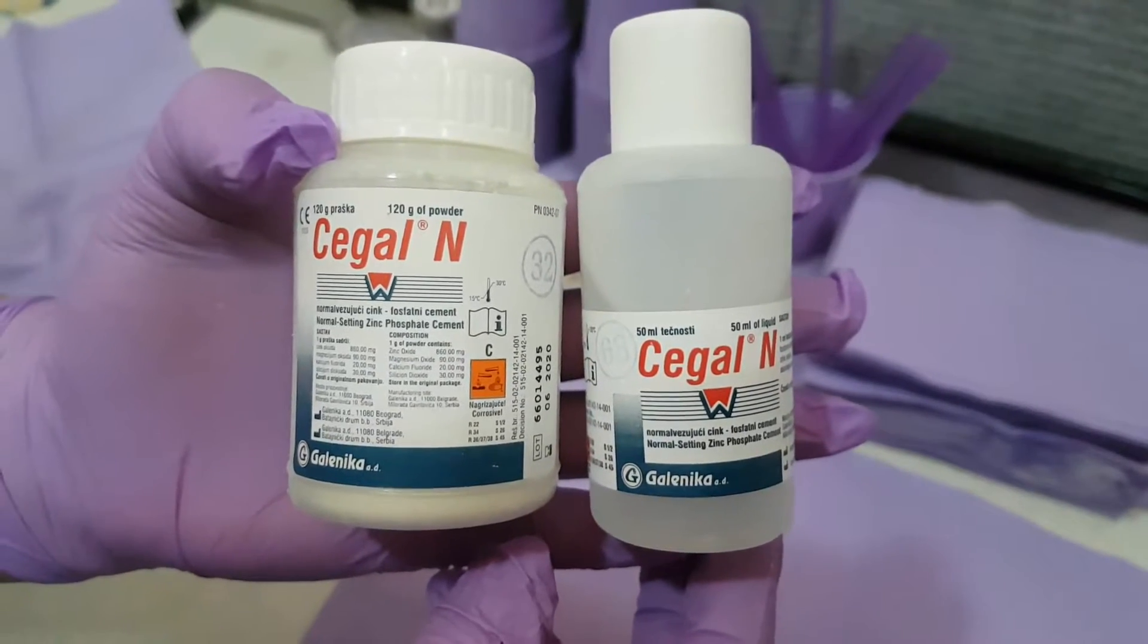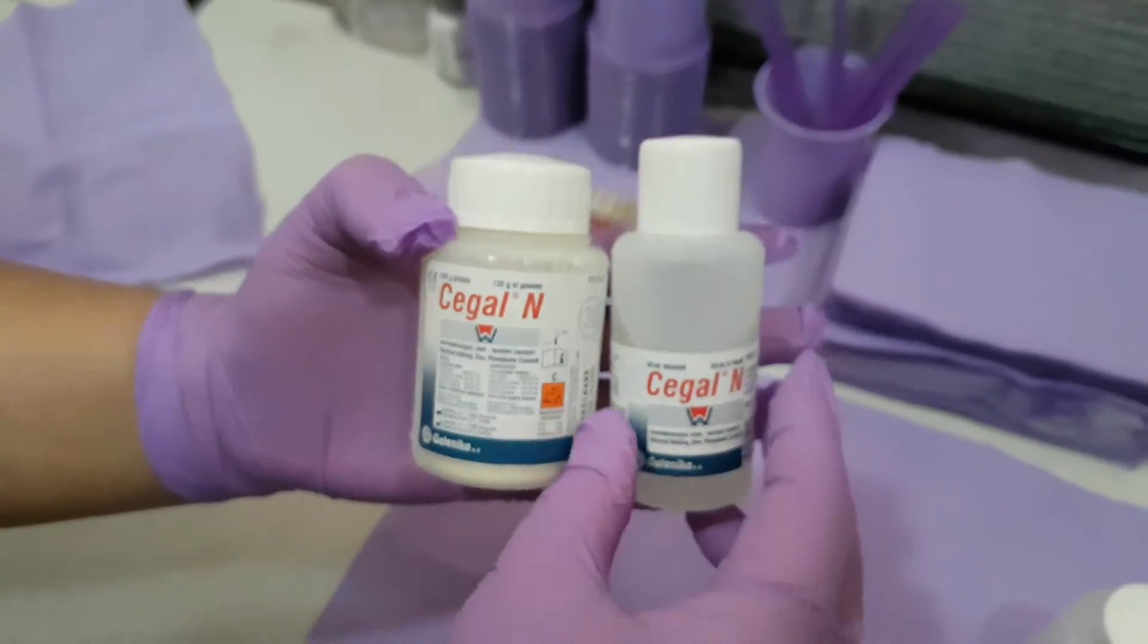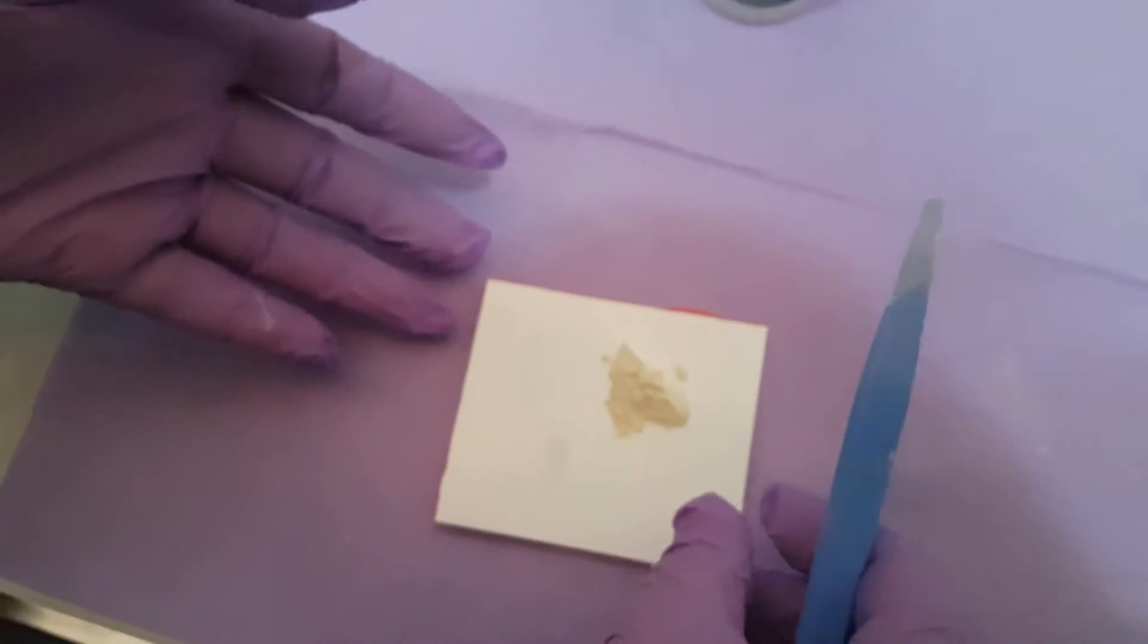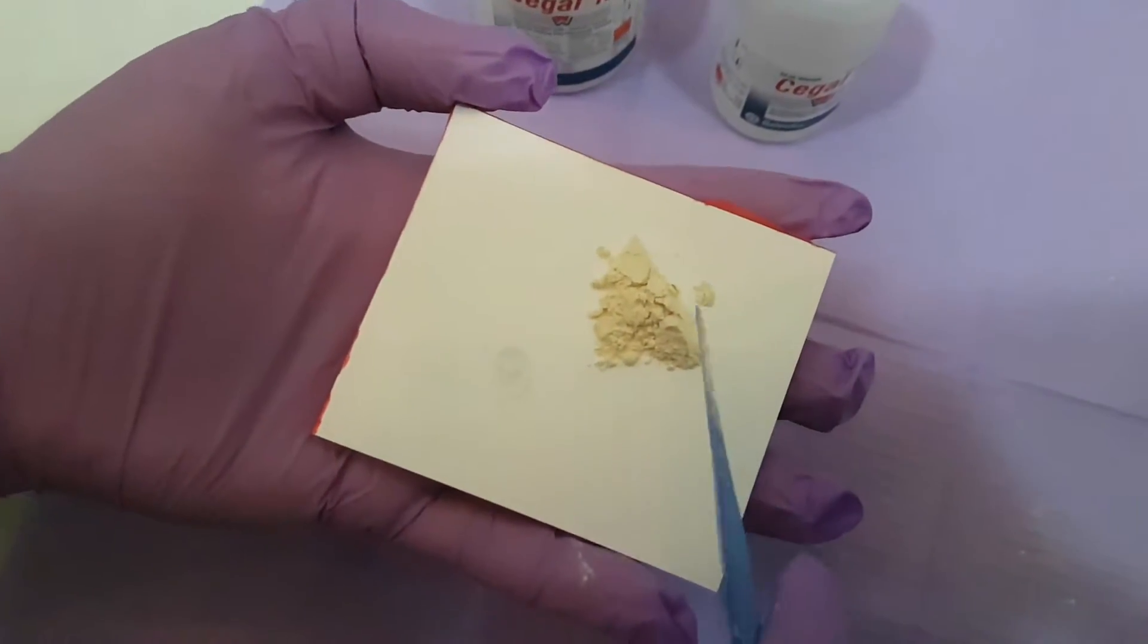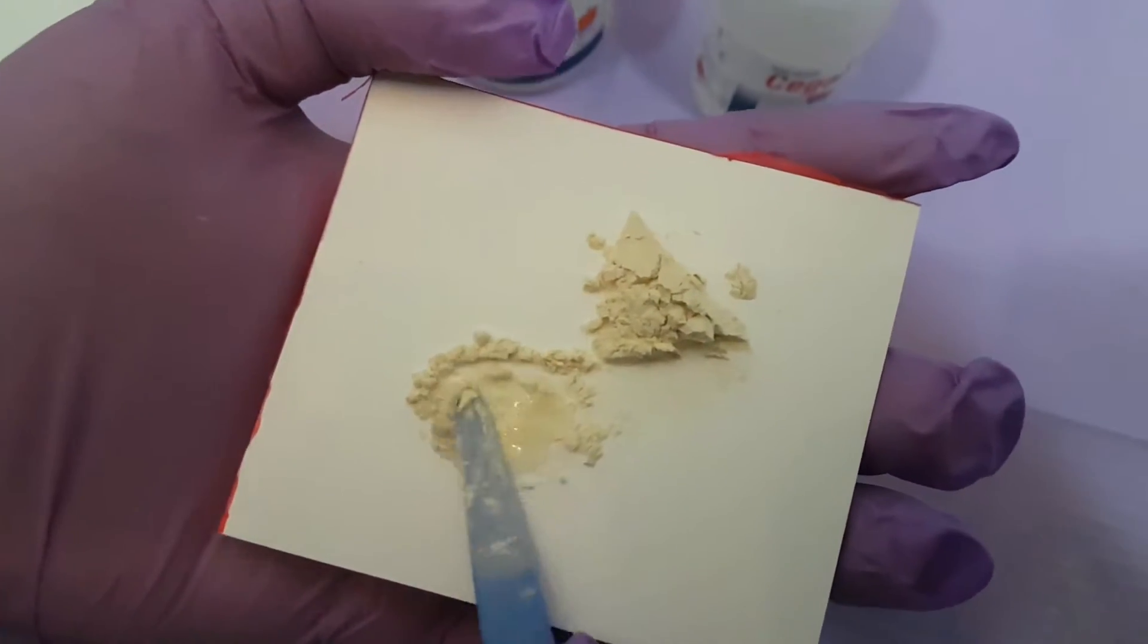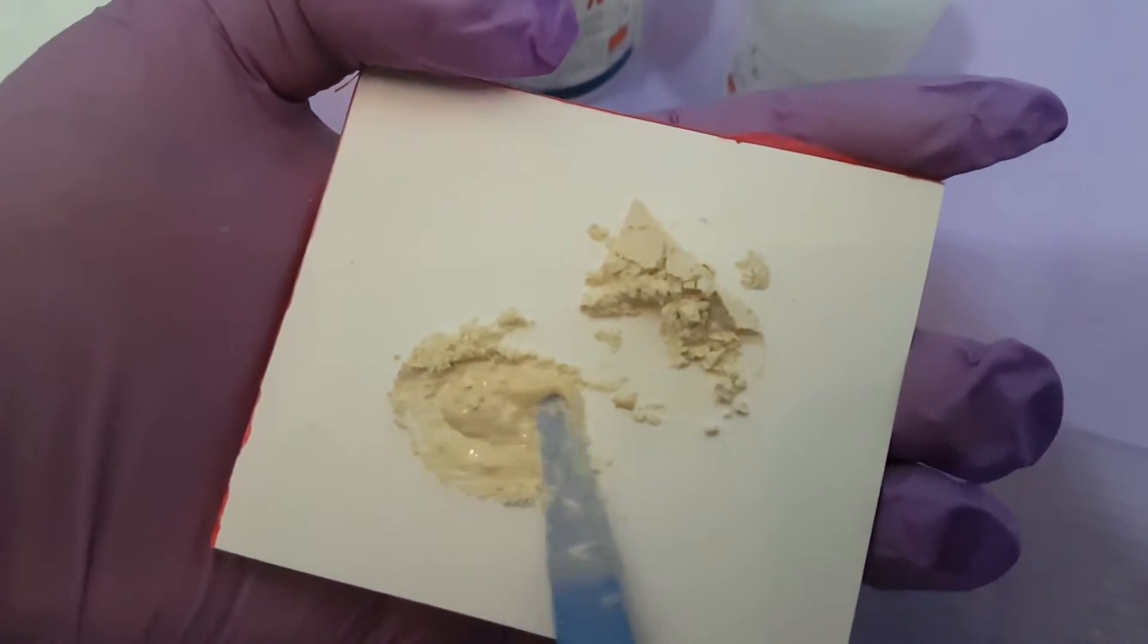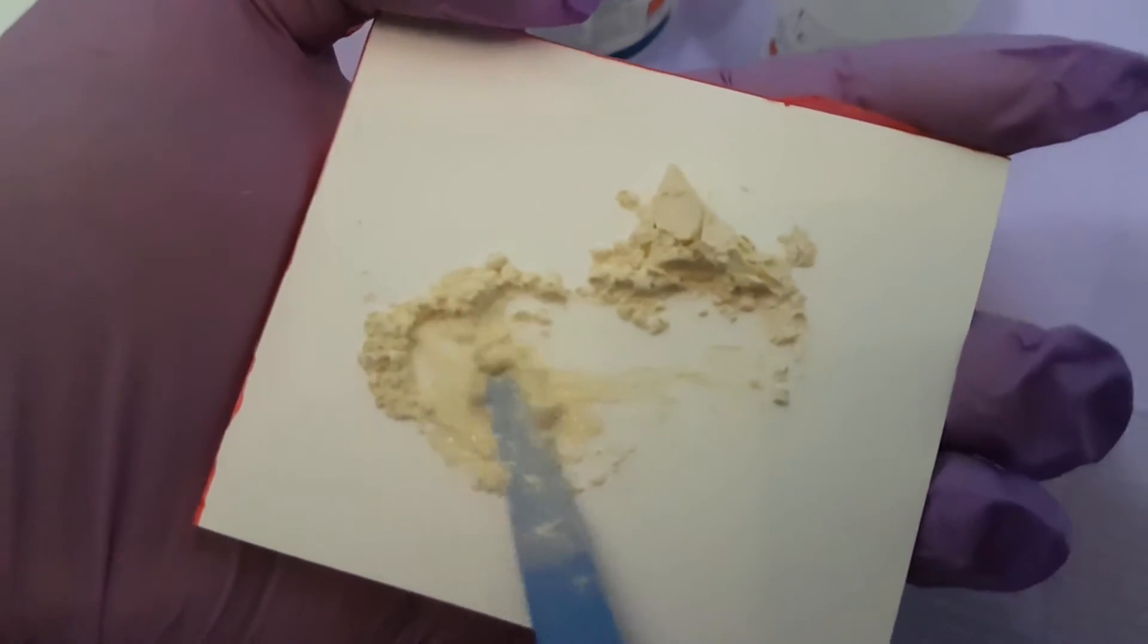Now we will show you how you need to mix the powder and liquid in the right consistency. We take small parts of the powder and mix them up with the liquid. This is a cement that has a short working time.